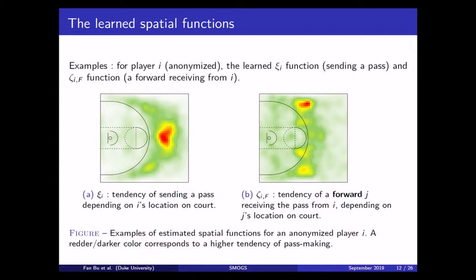So, we see that for this particular player, he really likes to send a pass when he's standing just outside the middle three-point line. The right panel shows the receiver spatial function for a forward on the team. So, when a forward is standing outside of the right side of the three-point line, he is very likely to receive a pass from this particular ball carrier player i in that particular game.